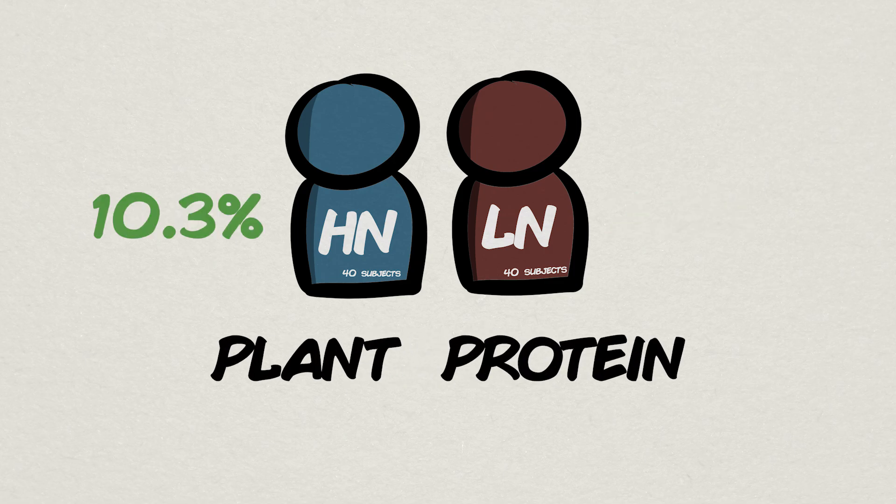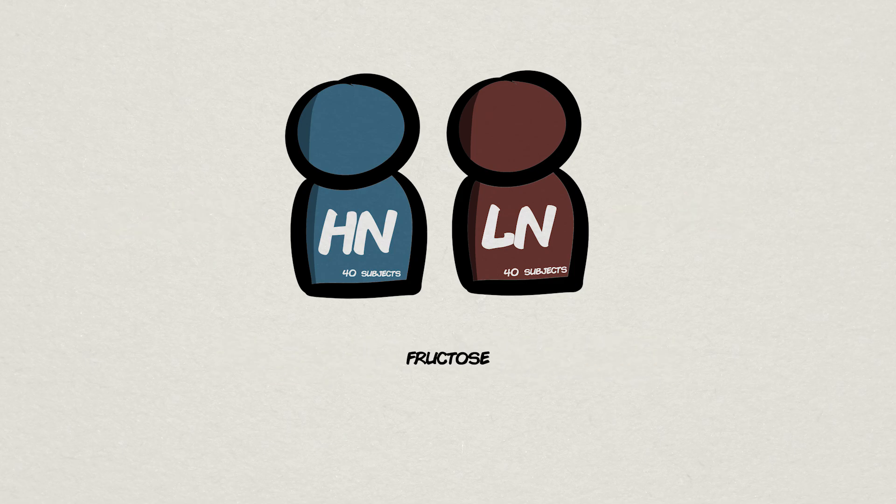10.3% went to plant proteins, my favorite stat, for the high-nutrient quality group. 5.7% for the low-nutrient quality group. And finally, fructose...